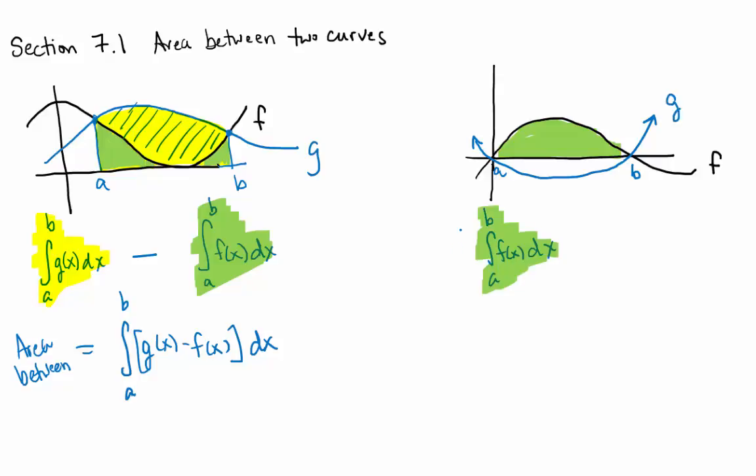How would we find the area between g and the x-axis? So the integral from a to b of g of x dx would actually give us a net signed area. So it would give us a negative value, the opposite of the area we're looking for. That always happens when you have a negative function.